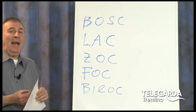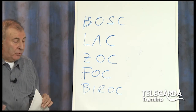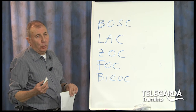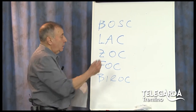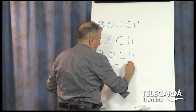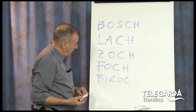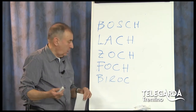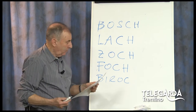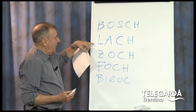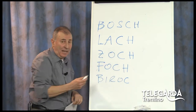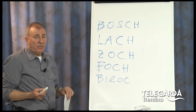Io consiglio, quando dobbiamo pronunciare la C col suono duro — bosque — di metterci la H. Dove non c'è l'H, si legge la C diciamo dolce: birocque. Quindi: bosque, lacque, zocque, foque, birocque. Vedete la differenza? Se non mettevo l'H, pronunciavo birocque, invece è il birocque. Bosque è il bosco.